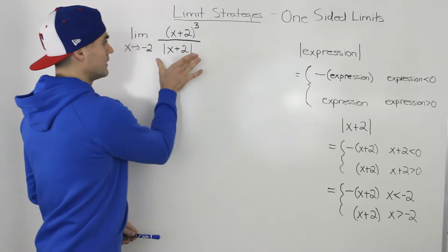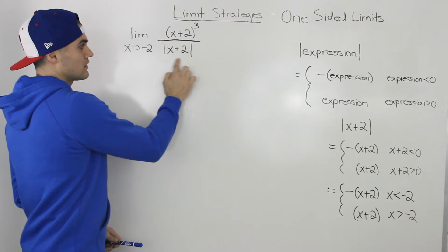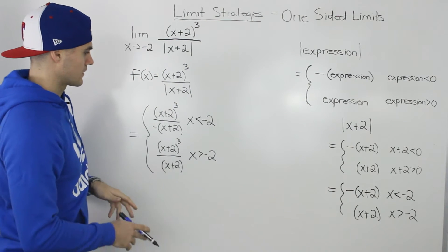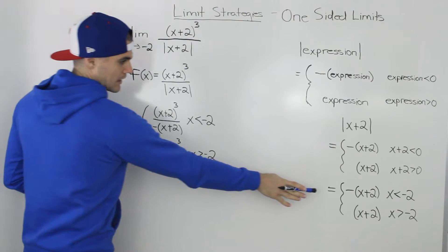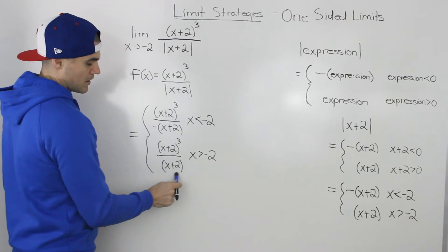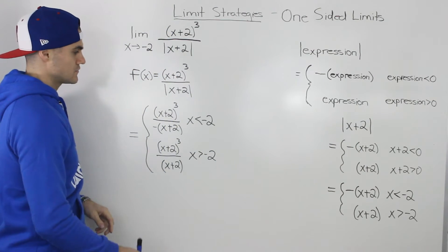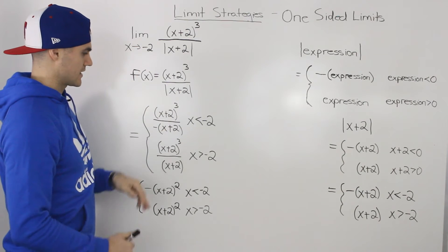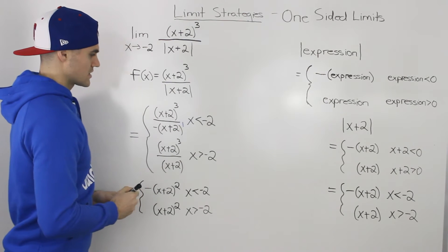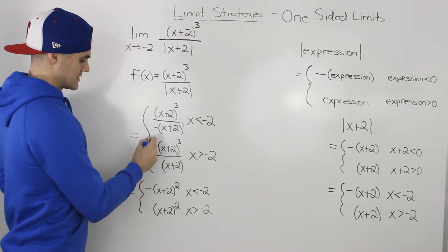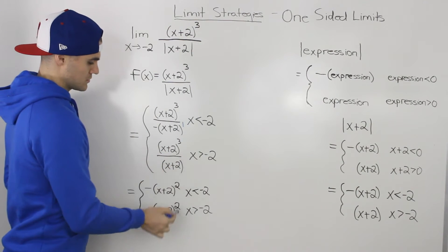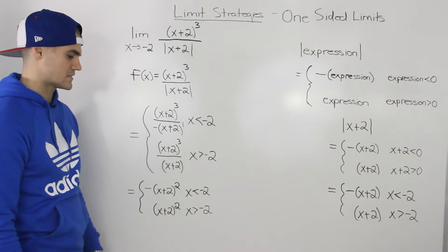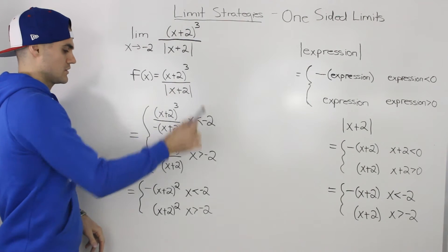Now we incorporate that piecewise function into the original function. We're making a piecewise function for the expression in the limit we were given. The absolute value of x plus 2 becomes negative x plus 2 when x is less than negative 2, and positive x plus 2 when x is greater than negative 2. The numerator, x plus 2 to the power of 3, stays as is. Simplifying, x plus 2 cubed divided by x plus 2 gives x plus 2 squared, with a negative in front for the first piece, and positive x plus 2 squared for the second piece.